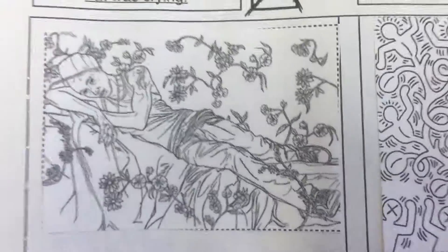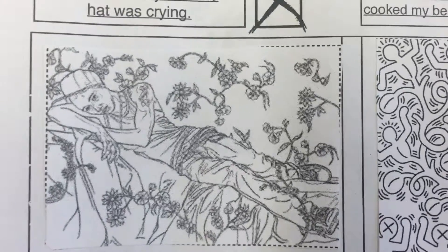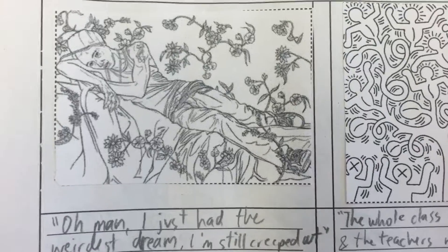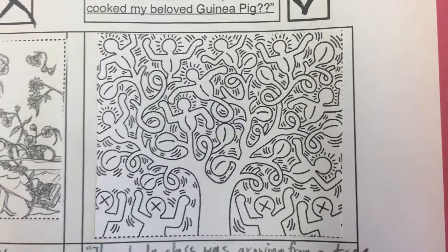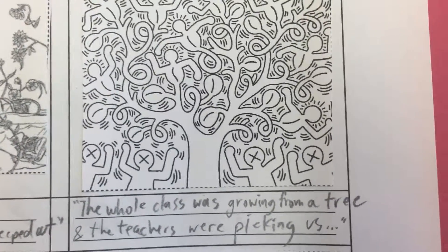I'm going to go make my story — snip snip snip — okay, ready to see mine? Here it is! So I found picture one, which was that guy — a painting by Kehinde Wiley. His quote is: 'Oh man, I just had the weirdest dream and I'm still creeped out.' There's the next picture, which is obviously like a picture of what happened in his dream: the whole class was growing from a tree and the teachers were picking us.